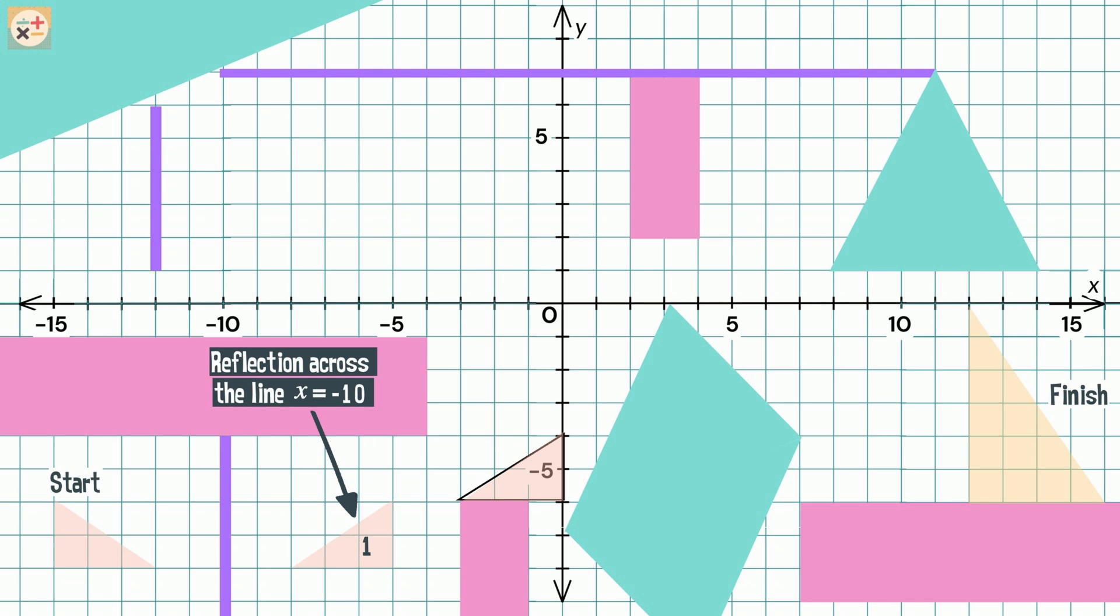For the second move, we have used translation. The shape has been translated five spaces to the right, along the X axis, and two spaces upwards, along the Y axis. The yellow lines show us this translation.